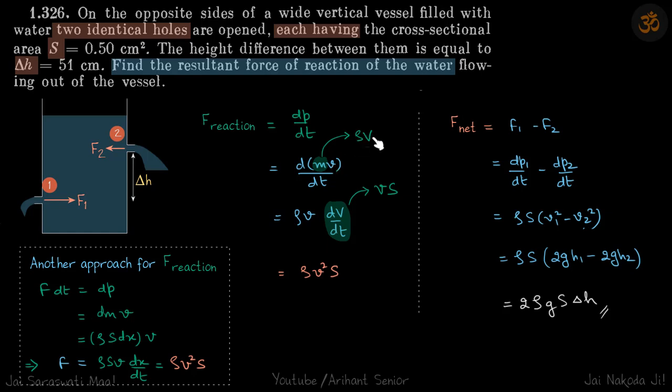Mass we can write as rho V. Now here V is constant, rho is constant, so only volume is left inside. So this becomes rho into velocity into DV by DT. Now we know volume flow rate is velocity into area, so this becomes rho V square S, which is a constant as expected, because the water is coming out with constant velocity.